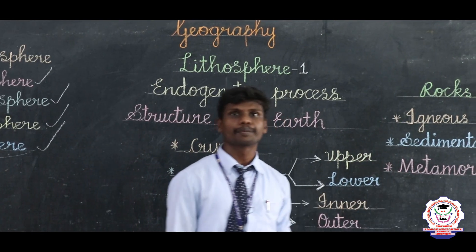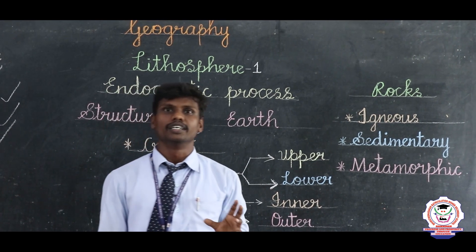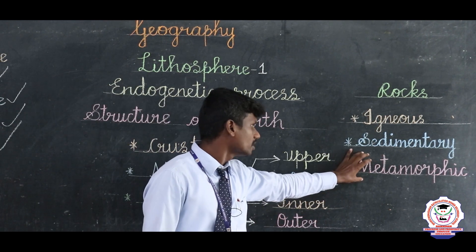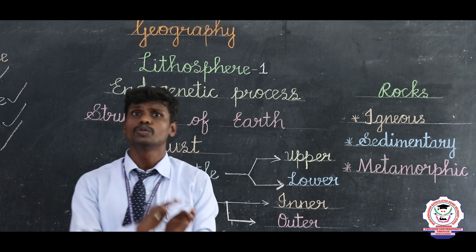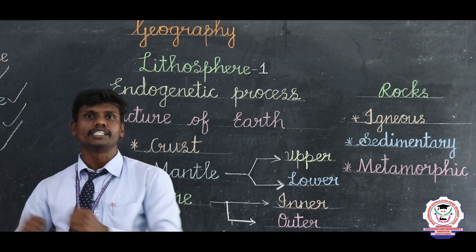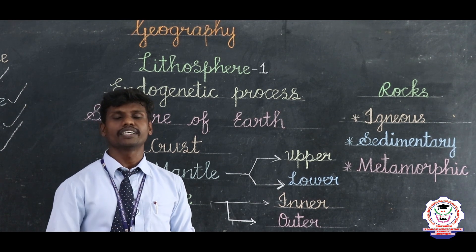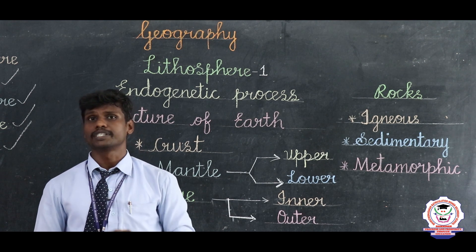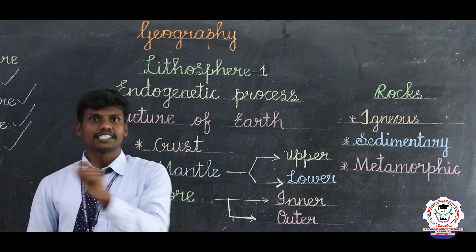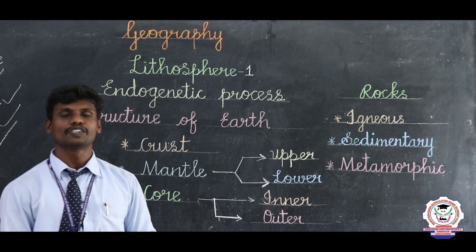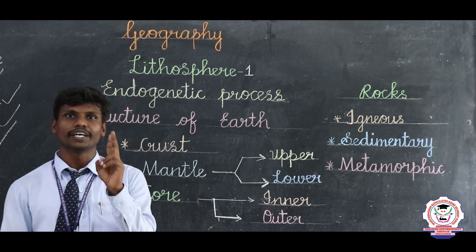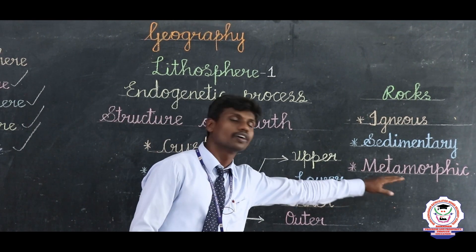The third rock is known as metamorphic. The word metamorphic comes from metamorphosis, which means change of form — so totally the rock shape is going to change. There are a number of examples, but two special ones: first, basalt is going to change into schist; and the second type, limestone, is going to convert into marble. So these are the two examples we study in metamorphic rocks.